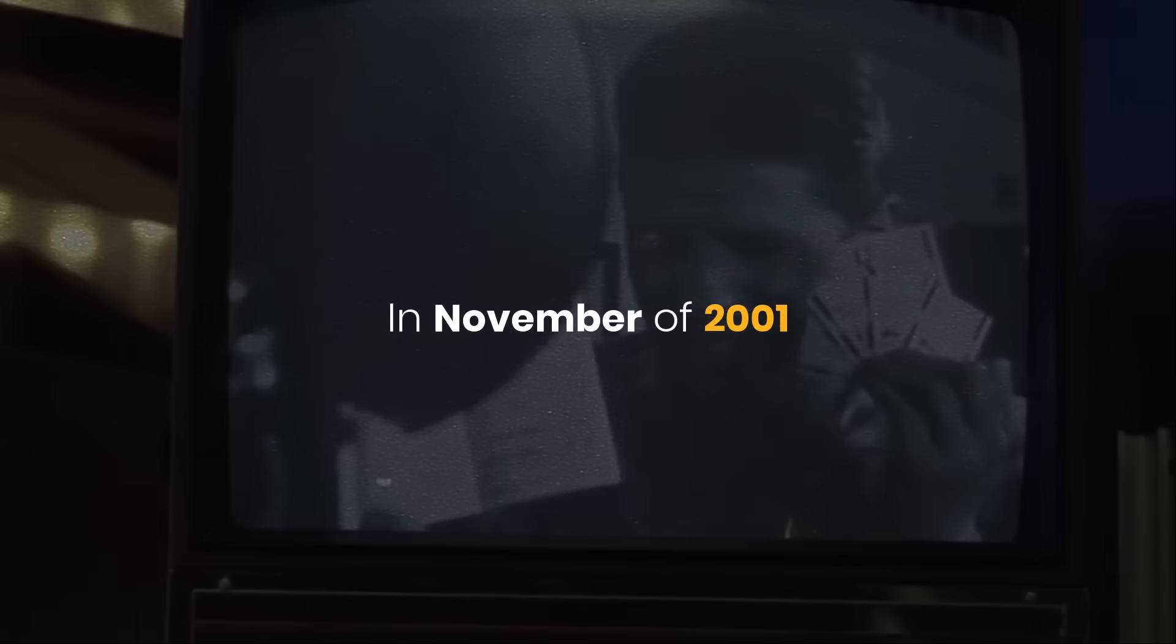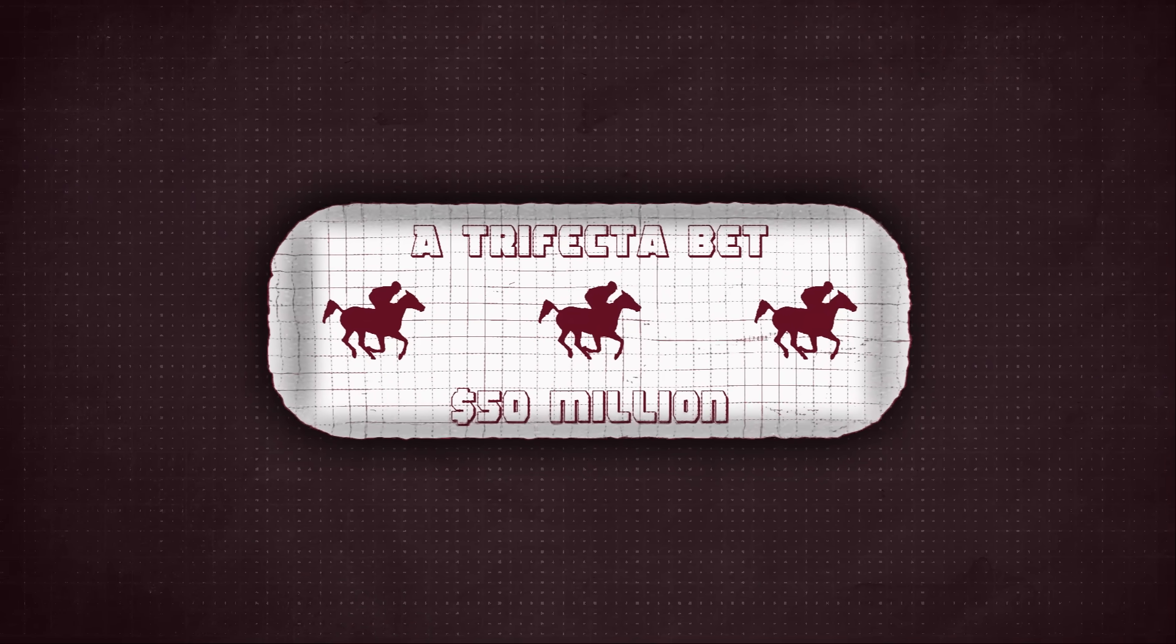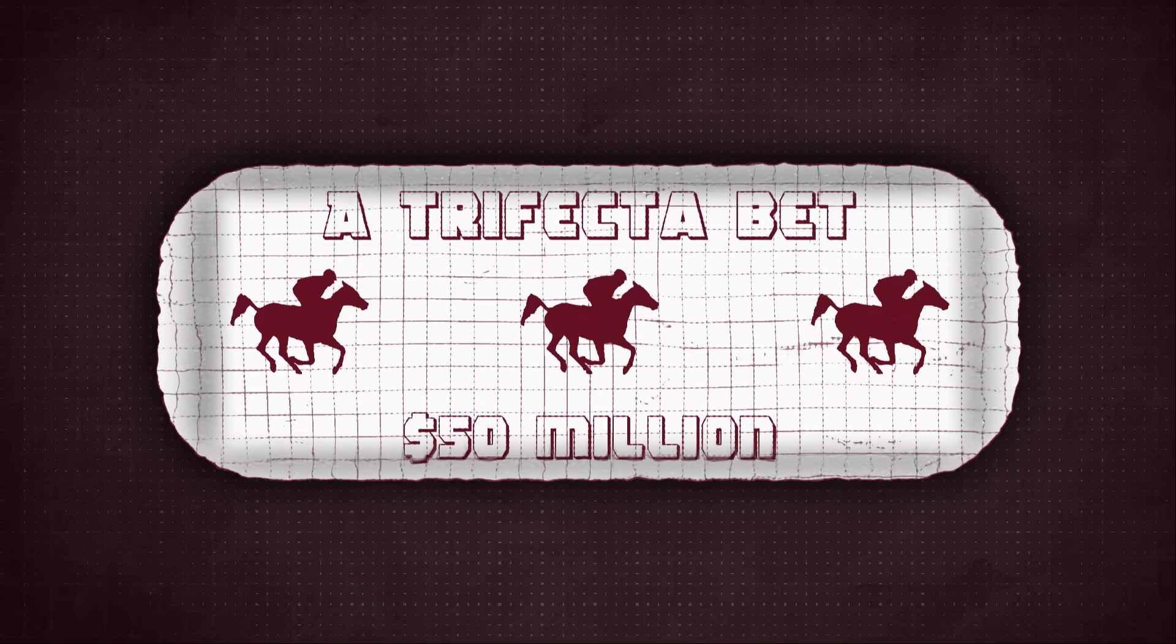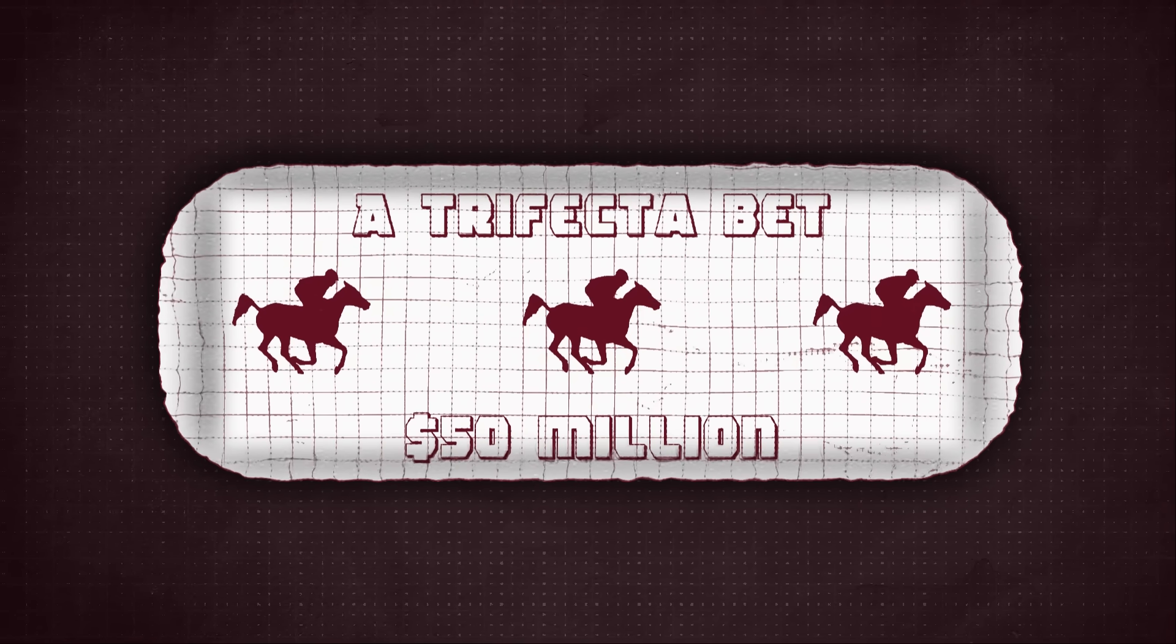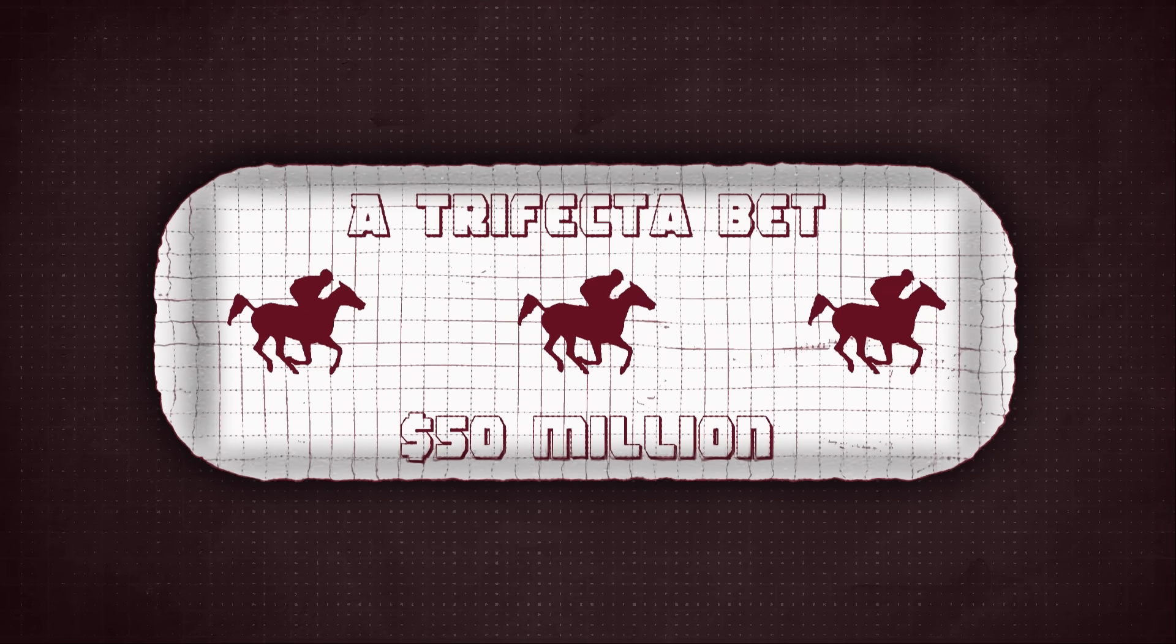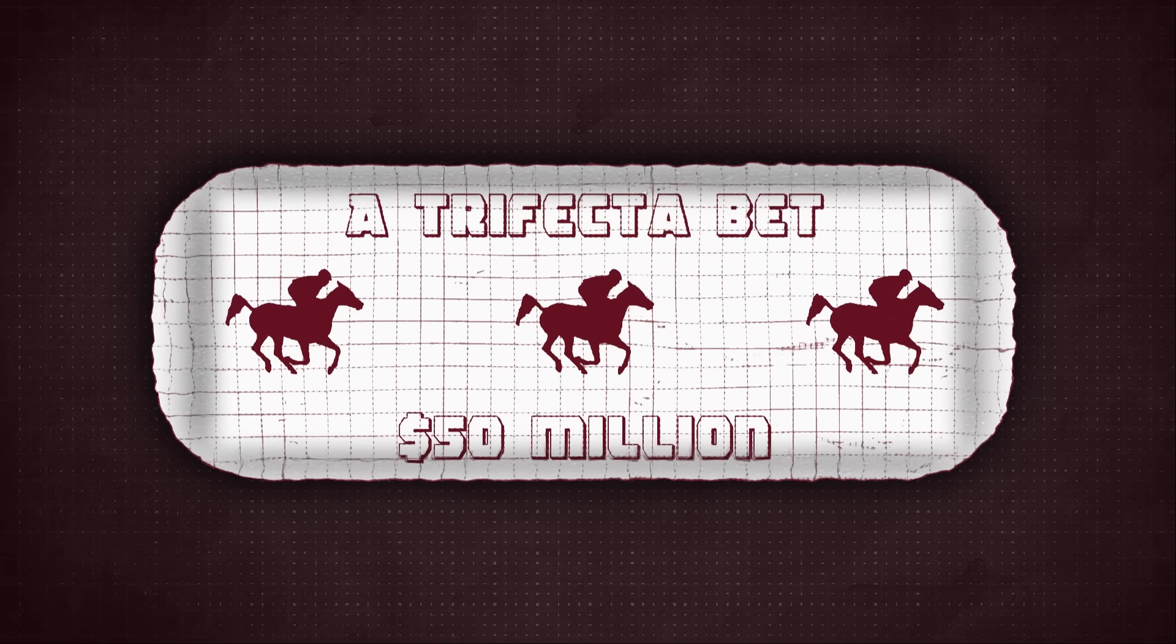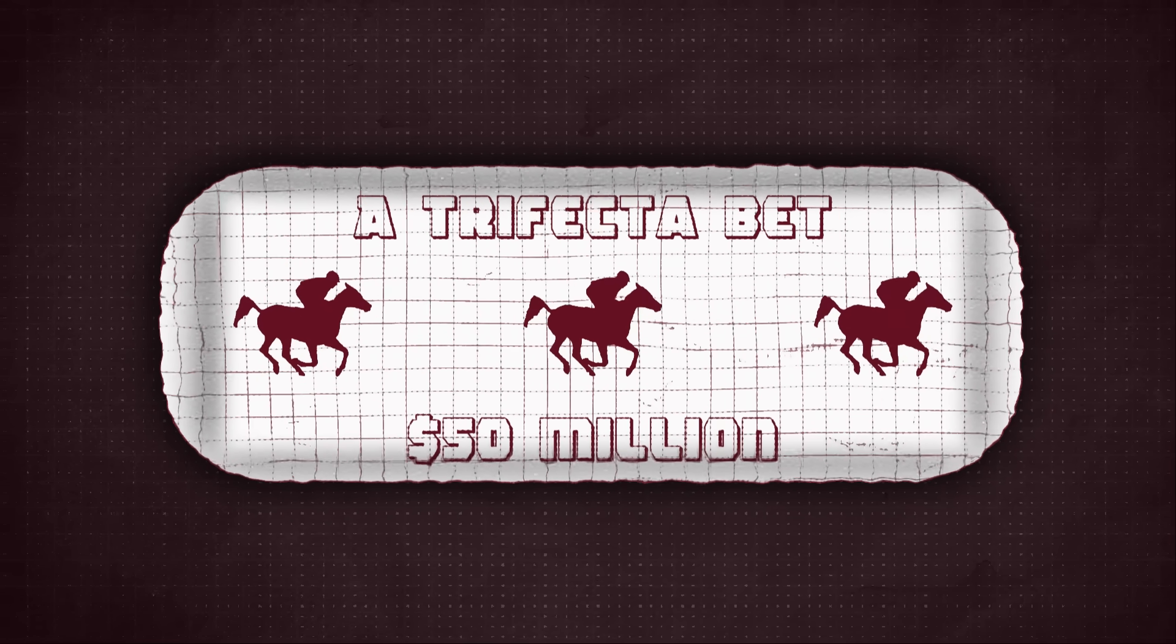In November of 2001, deep inside the data vaults of the Hong Kong Jockey Club, a single ticket came through the system. It was perfect. A trifecta bet, predicting not just the winner, but the exact order of the top three horses in the season's biggest races. The payout? Over $50 million U.S. dollars.